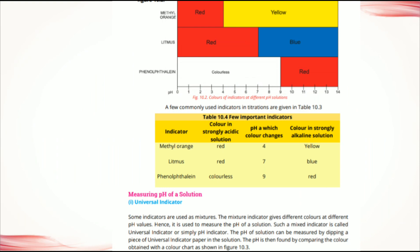Now, methods for measuring pH of a solution. How can we measure the pH of a solution? There are two different methods: the first is universal indicator and the second is a pH meter.